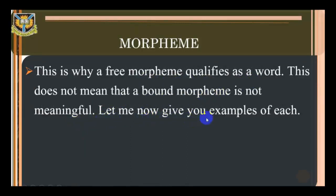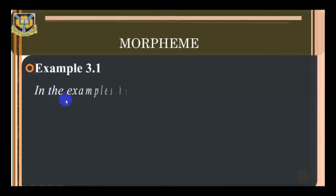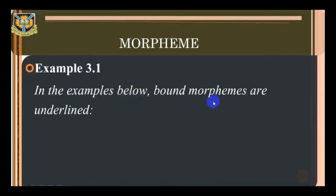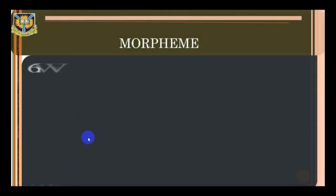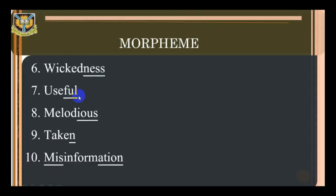Examples of bound morphemes are underlined in the following words: bags, helped, disadvantaged, apolitical, correction, wickedness, useful, melodious, taken, misinformation. A tip: a free morpheme can stand on its own, while a bound morpheme depends on another morpheme to be meaningful.